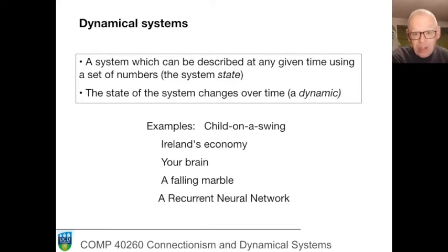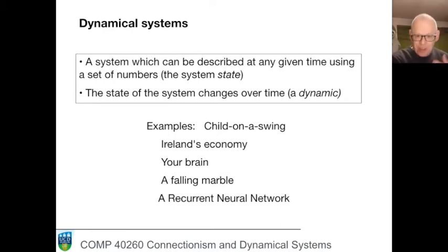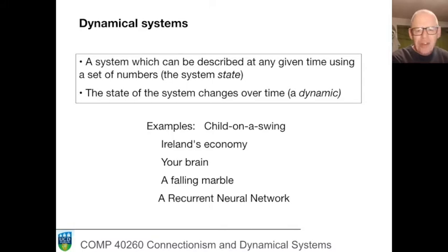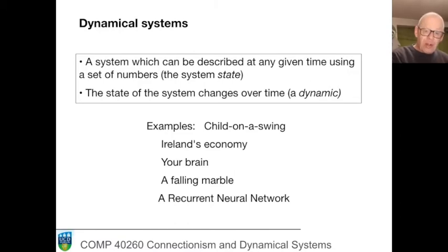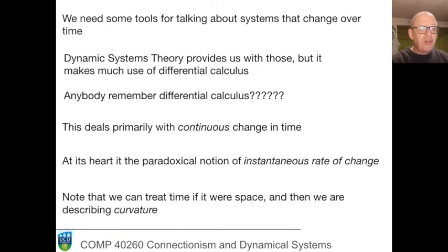A recurrent neural network is one case where we can say what its state is at time t, and furthermore we're in charge of the rules, so we can specify the dynamic — we can say exactly how that state will change over time, assuming the dataset on which it will be trained is given. These are different ways of framing our observations, and we need tools for recognizing when we can and cannot apply the tools of dynamical systems theory.